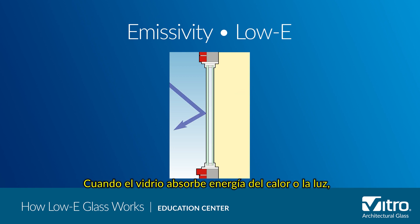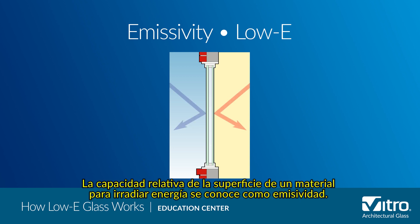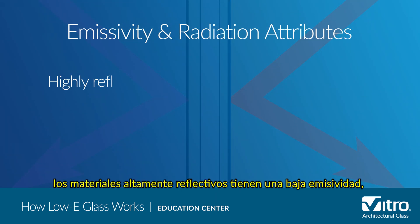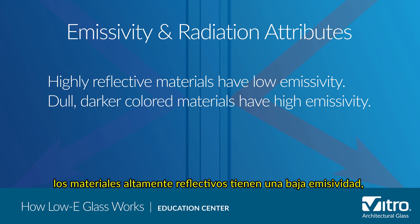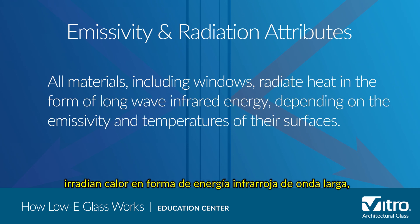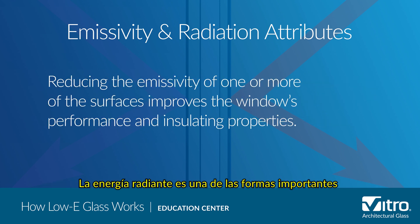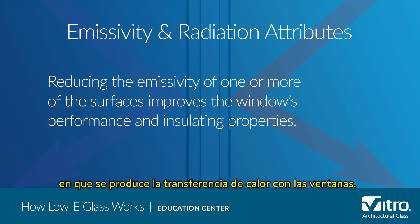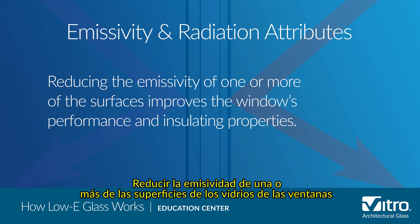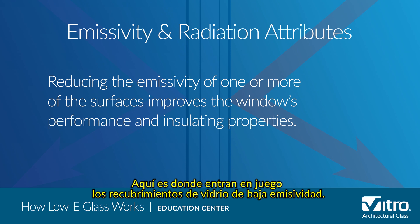When heat or light energy is absorbed by glass, it is cooled by moving air or re-radiated by the glass surface. The relative ability of a material surface to radiate energy is known as emissivity. In general, highly-reflective materials have a low emissivity, and dull, darker-colored materials have a high emissivity. All materials, including windows, radiate heat in the form of long-wave infrared energy, depending on the emissivity and temperatures of their surfaces. Radiant energy is one of the most important ways heat transfer occurs within windows. Reducing the emissivity of one or more of the window glass surfaces improves a window's performance and insulating properties.